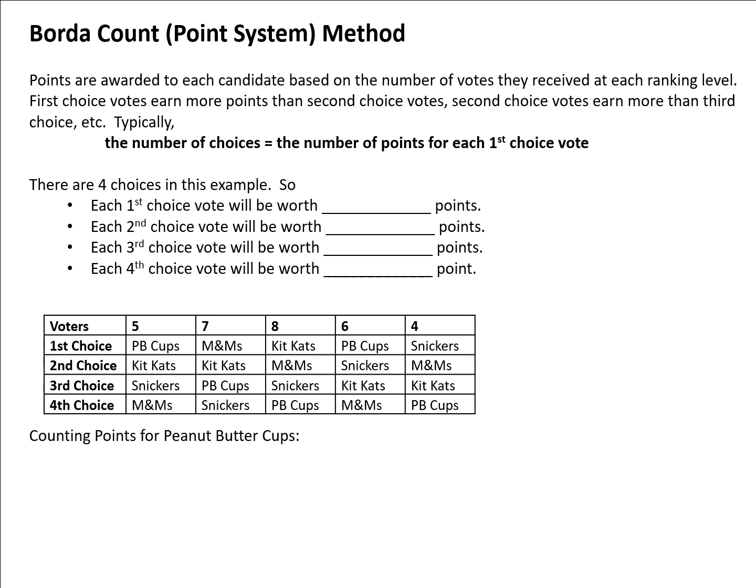The fourth method is called Borda Count, or the point system method, for finding the winner of an election. In Borda Count, points are awarded to each candidate based on the number of votes they receive at each ranking level. First choice votes earn more points than second choice votes, second choice votes earn more than third choice, and so on.